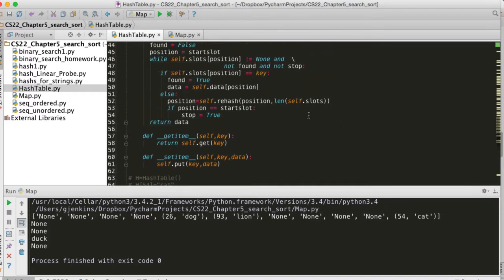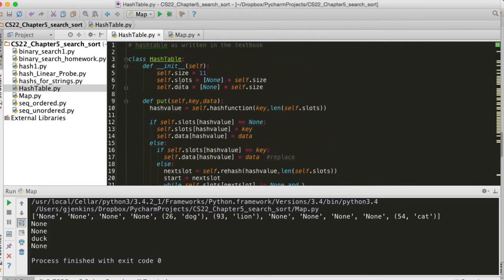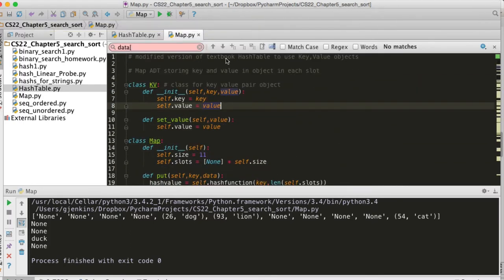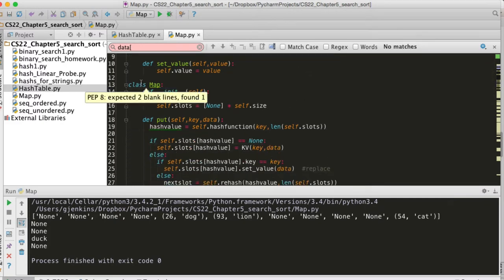Now we mentioned that instead of having two lists, you can just do one list. And so this is the map code. So map just has one list called slots, but what we store in the slot is not the key or the value, but an object that has the pair of them.